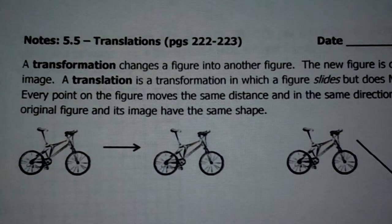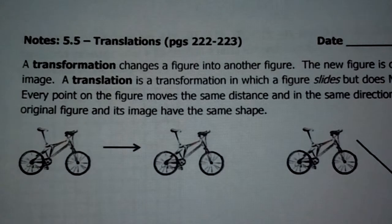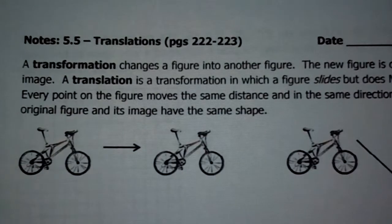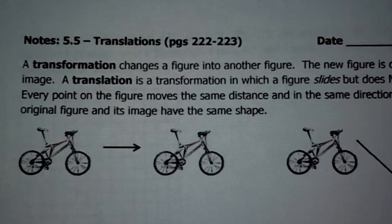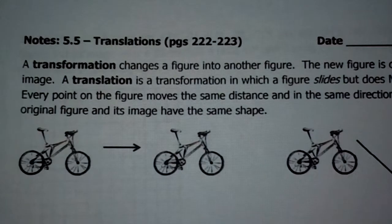First off, what is a translation? It's a kind of transformation. A transformation changes a figure into another figure, like a transformer. The new figure is called the image. So you start out with one figure and you're going to change that to something else — that new something else is the image.